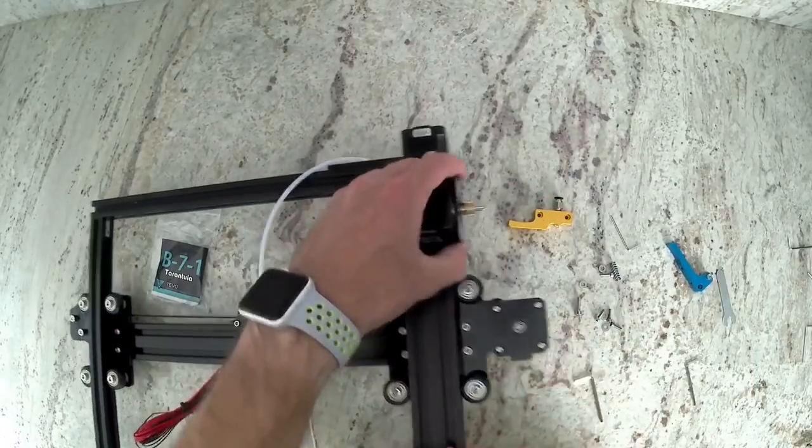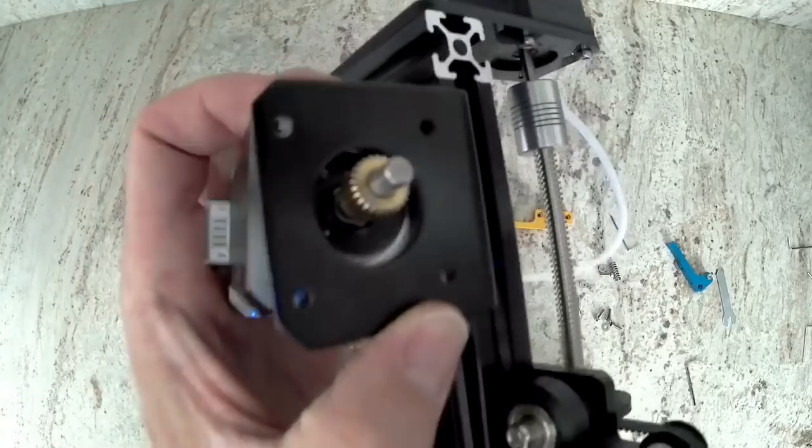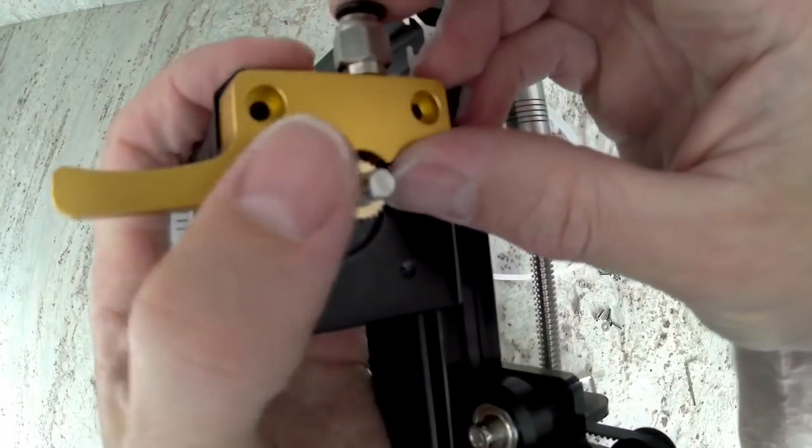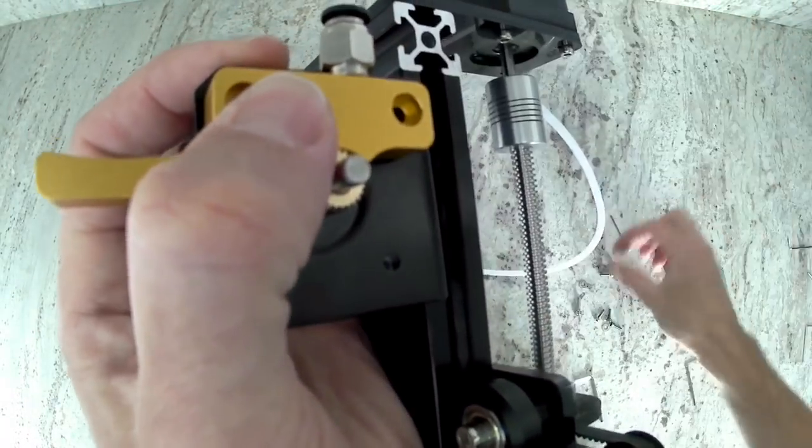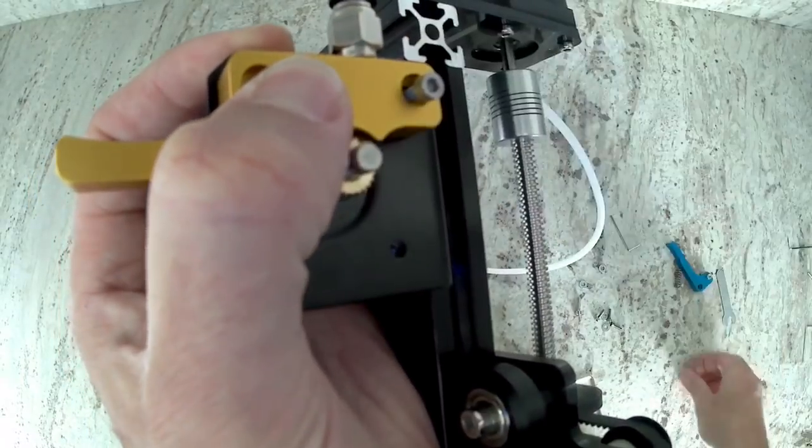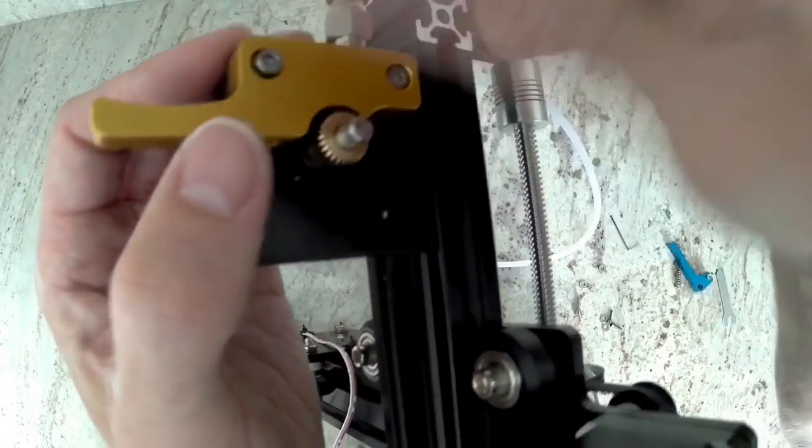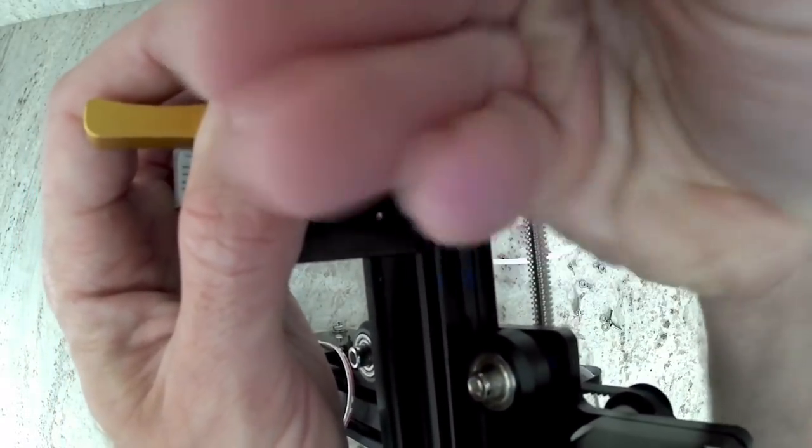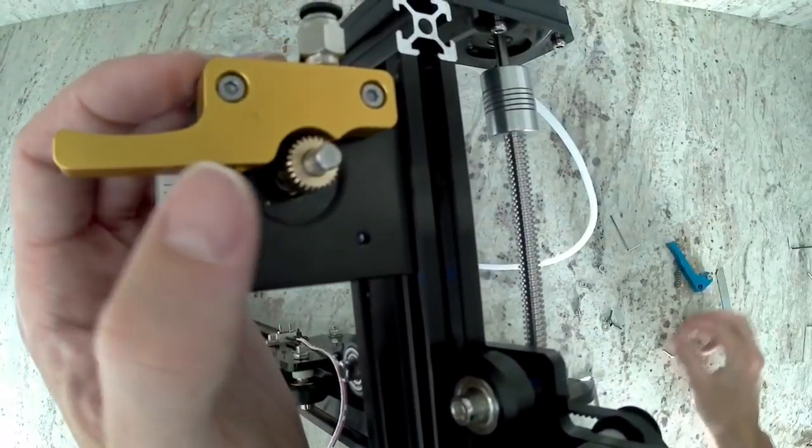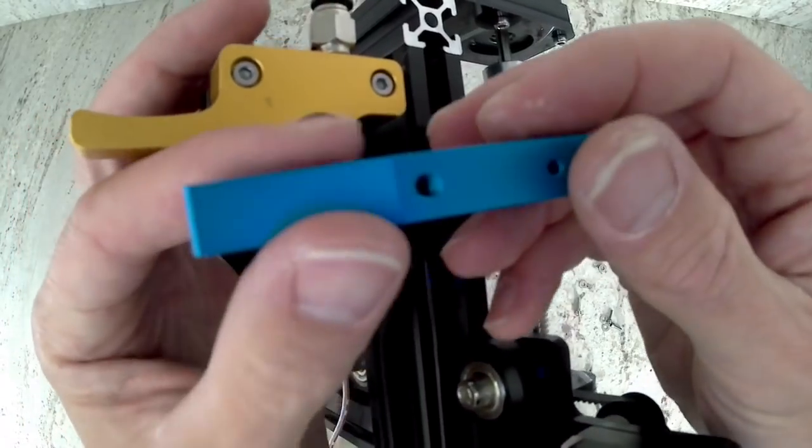Now we're going to install the top gold piece. We're going to do that with two bolts, and then we're going to go into the top two holes of the metal bracket and motor.